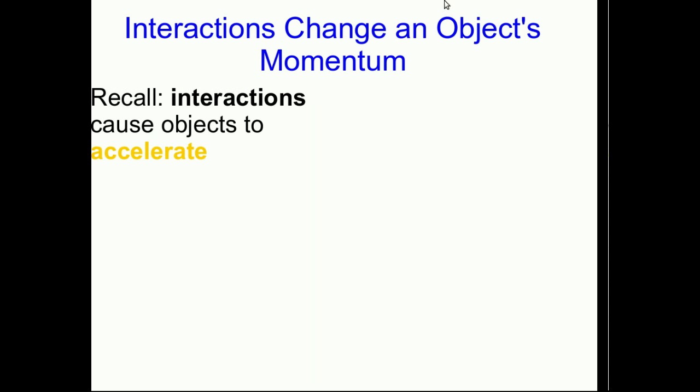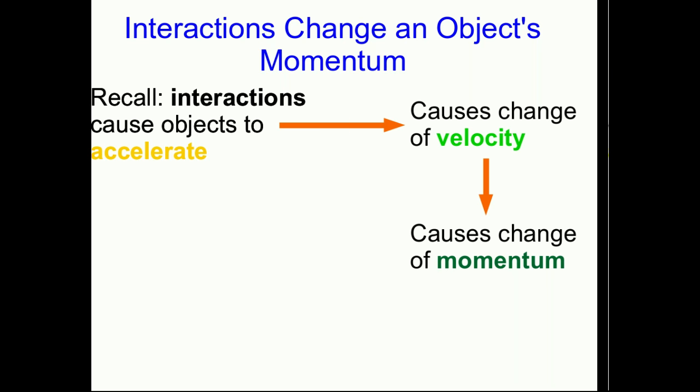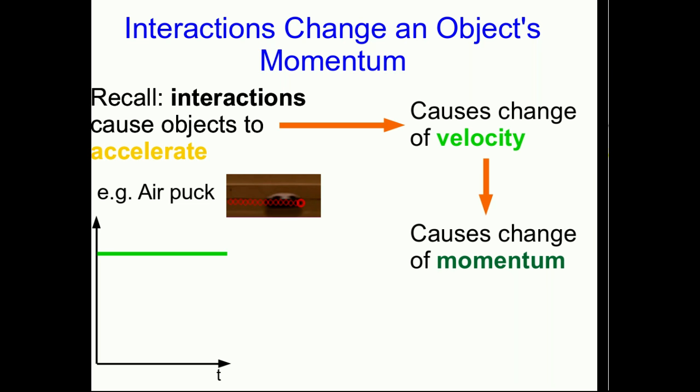Remember that interactions cause objects to accelerate. In fact, that's practically our working definition of what an interaction is. Well, acceleration is the rate of change of velocity, so interactions cause objects' velocities to change. But of course, momentum is calculated from the velocity, and so the other thing that's clear is that interactions change the momentums of objects. As an example, at one extreme is an air puck. It moves along at virtually constant velocity, and that's because it has virtually no interactions with the things around it. And so its px versus t graph is just going to be another straight horizontal line, because all you're doing is multiplying vx by the air puck's inertia—it's just a rescaling of the graph.